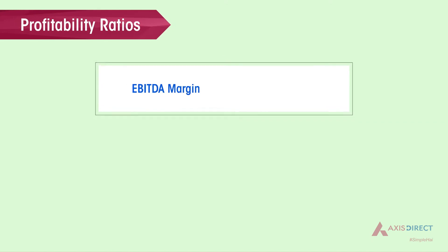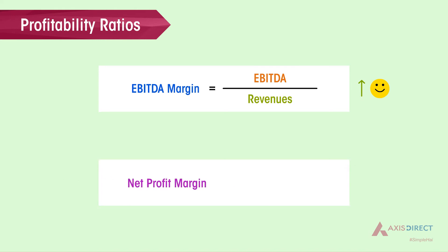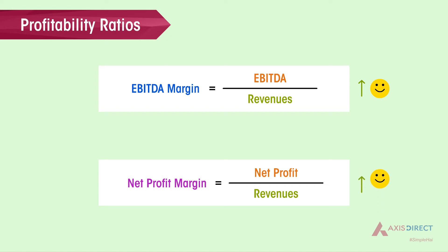EBITDA Margin: this ratio measures how much cash the company generates from its operations per every rupee of revenues earned. A higher EBITDA Margin indicates better performance of the company. Net Profit Margin: this ratio measures how much money the company earns from its business per every rupee of revenue earned. The higher the ratio, the more effective a company is at cost control and generating higher profits.